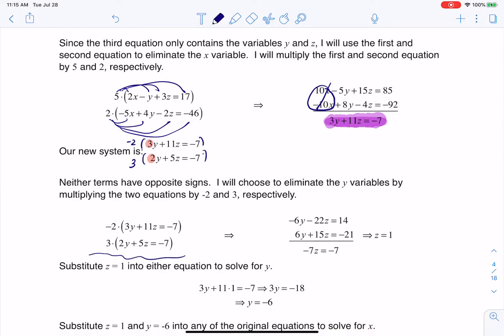That's what you see me doing here. I distribute to every term, and by design the y variables eliminate. I get negative 7z equals negative 7, so z is 1, a nice whole number. These answers don't have to be whole numbers, but it's nice when they are. Now it's a matter of backsubstituting.